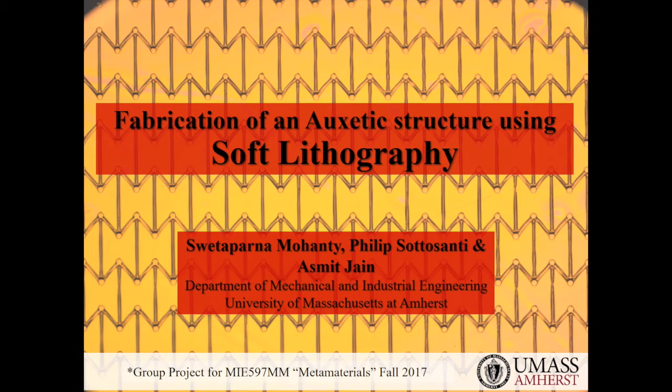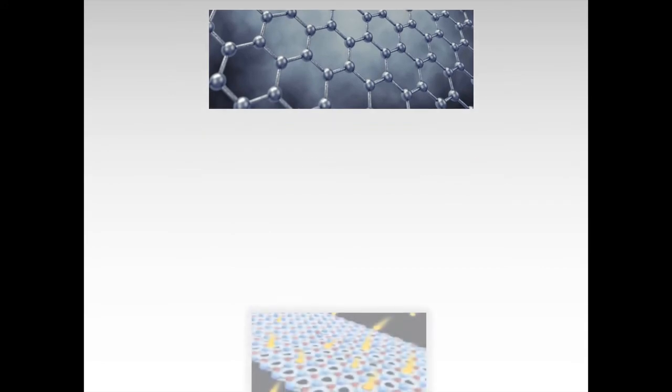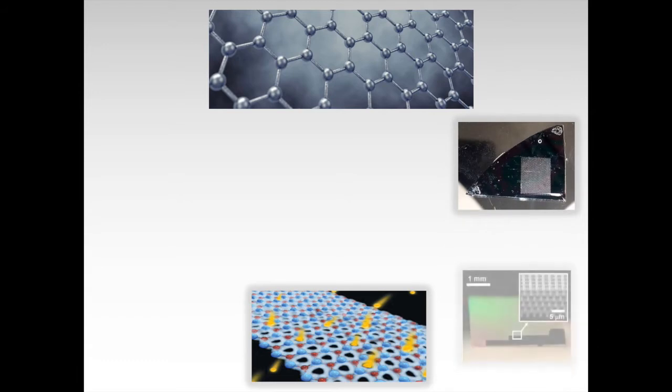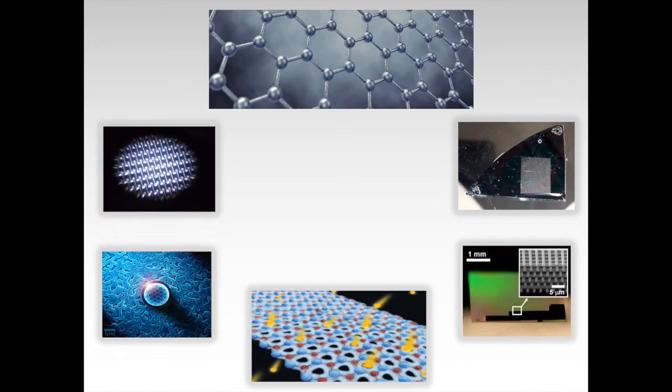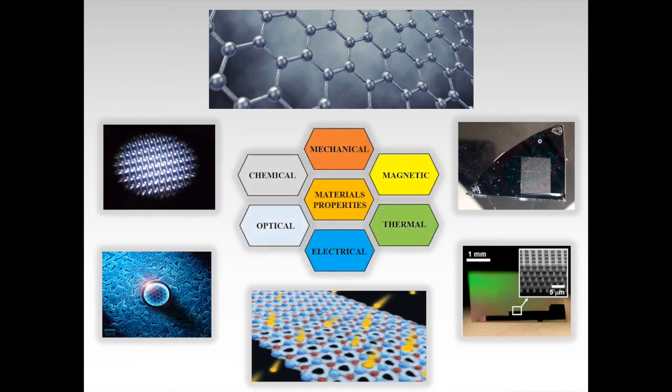Fabrication of an auxetic structure using soft lithography. This topic is based on the fabrication of nano and micro materials displaying some interesting properties based on the structures of these materials, rather than their compositions. But before delving further into this topic, let's first try to understand a few fundamental mechanical properties which will help us to get a complete idea about this process.